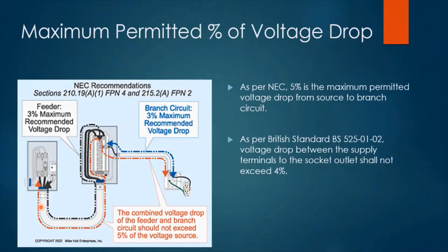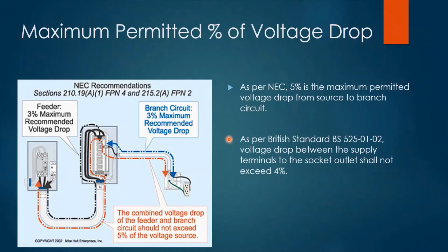According to the National Electric Code (NEC), 5% is the maximum permitted voltage drop from source to branch circuit. As clarified in this diagram, a 3% maximum voltage drop from the MDB or main DB to SMDB is recommended, and similarly 3% is permitted from the ADB to a branch circuit. It is also stated that 5% is the maximum permitted voltage drop combining the feeder and the branch circuit. According to British Standard, a maximum voltage drop of 4% is permitted between the supply terminals and the socket outlet. This means we consider 4 to 5% maximum voltage drop in our design calculations.